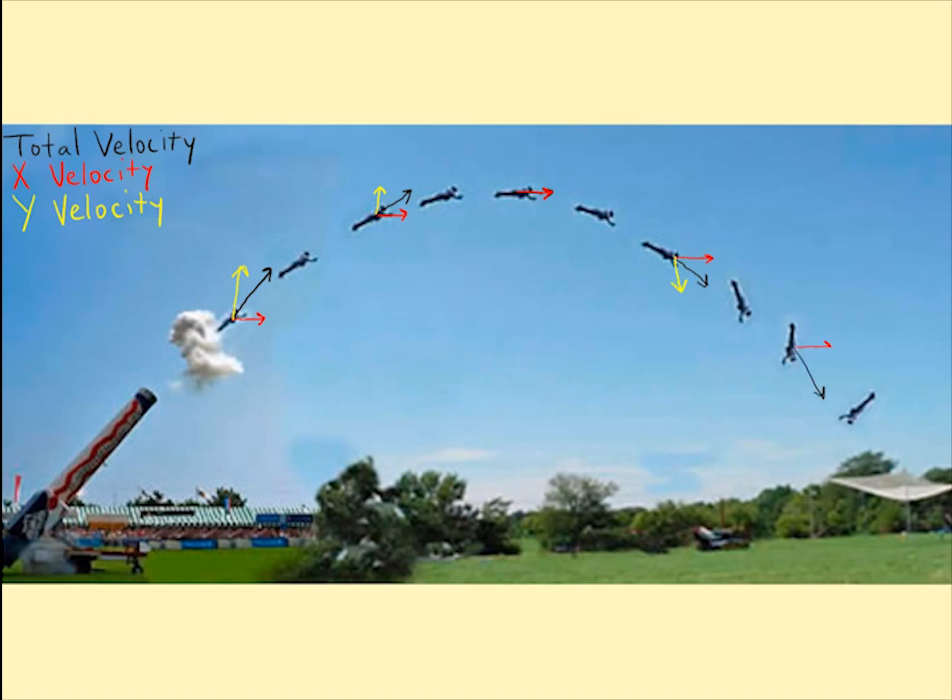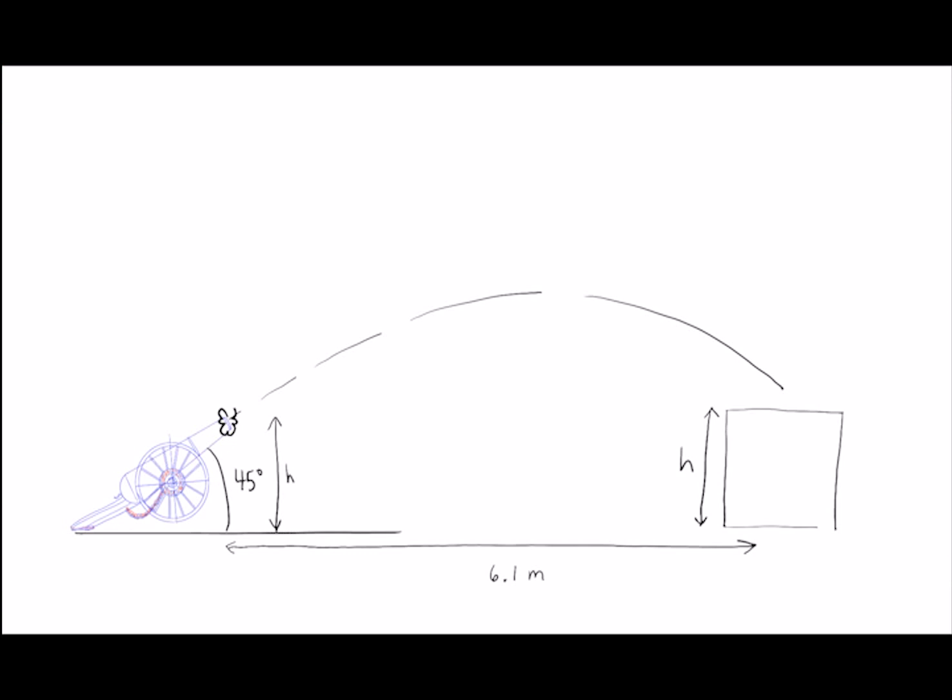She will only accelerate, or change her velocity, in the y-direction. That means her x-velocity stays the same the whole time. If we can find the launch velocity of the cannon, we can then use that to predict Zazzle's landing spot for any angle that the cannon is launched.